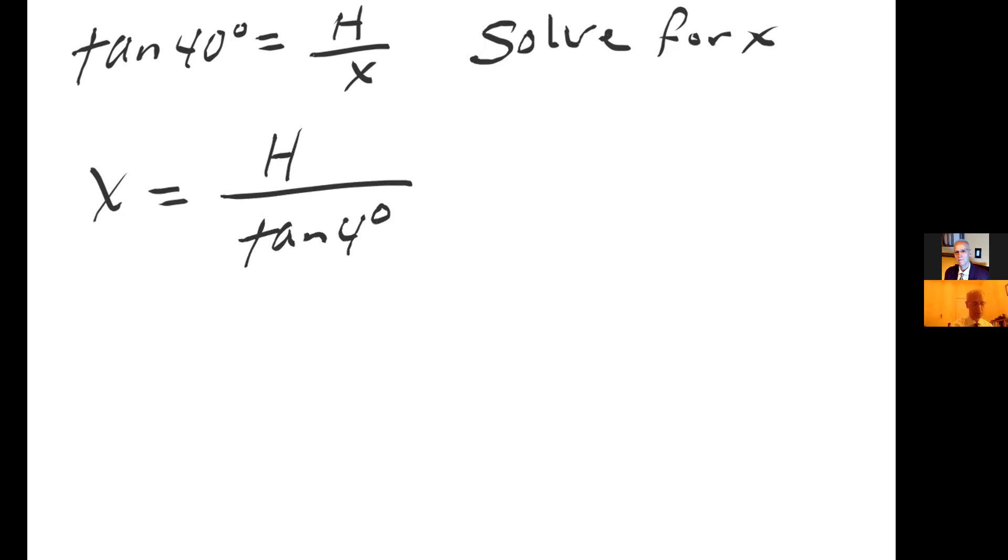From equation two, that we knew tangent of 40 degrees equals height over x, solving for x gives me x equals height over tangent of 40 degrees.